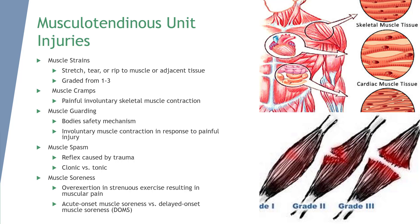There are three grades of muscle strains. A grade 1 strain involves some fibers being stretched or torn, resulting in tenderness and pain on active range of motion. Movement is painful, but full range of motion is still present.